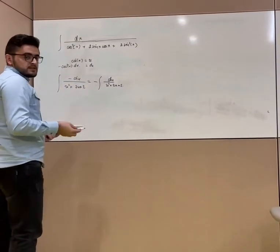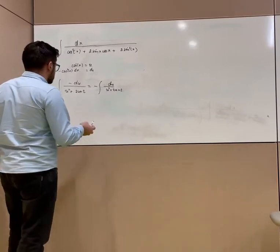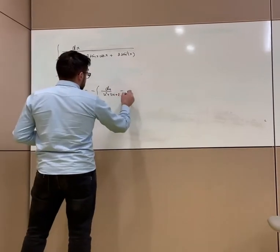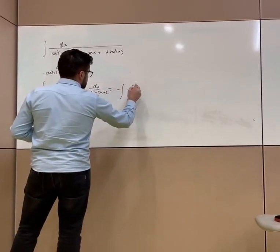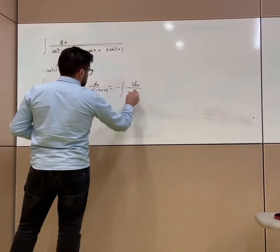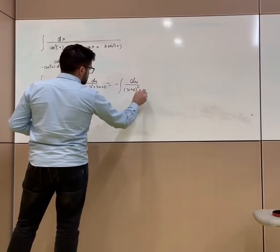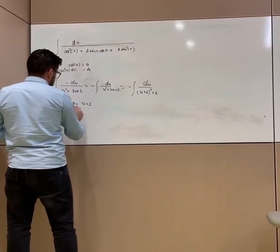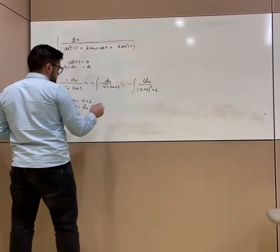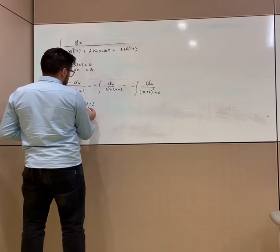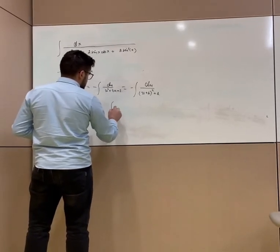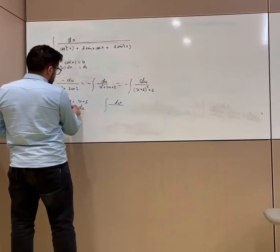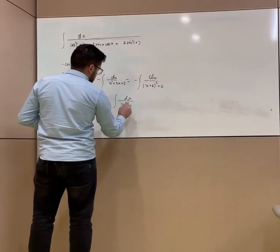Now let's apply another substitution. Completing the square: minus du over (u plus 1) squared plus 1. Let v equal u plus 1, then dv equals du. Applying this substitution, I get minus dv over v squared plus 1.